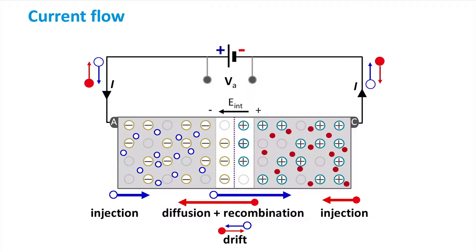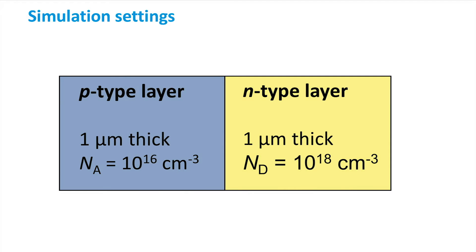In our next video, we will calculate the current-voltage characteristics for the PN junction. But before we get there, let's also take a look at how the band diagram of the PN junction diode is affected when a forward bias voltage is applied. We carried out simulations of a PN junction diode under different forward bias conditions in order to accurately visualize the changes in the band diagram.